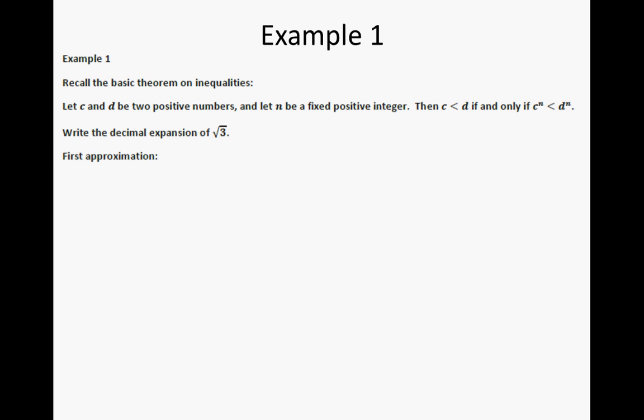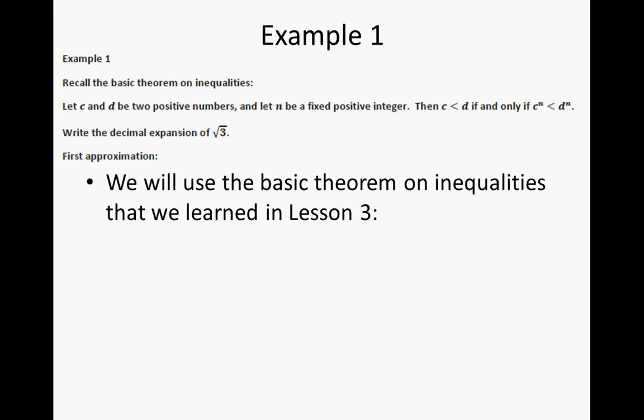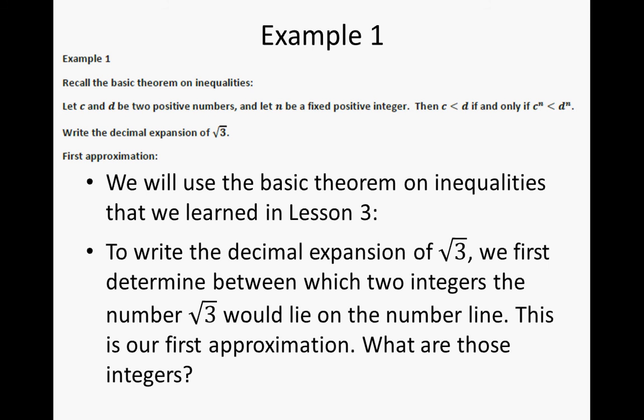Let's take a look at example 1. Recall the basic theorem on inequalities: let c and d be two positive numbers, and let n be a fixed positive integer. If c is less than d, if and only if c to the nth power is less than d to the nth power. With that, let's write the decimal expansion of the square root of 3. We first determine between which two integers the square root of 3 would lie on the number line — this is our first approximation.